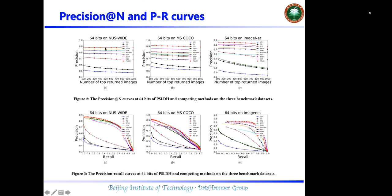The higher the line, the better the performance the method achieves. It can be found that all proposed methods achieve the best performance on the Precision@N WMAP metrics. These three images also show the results for PR curves, and all proposed methods achieve the best performance on PR curves as well.